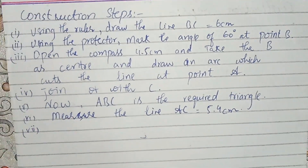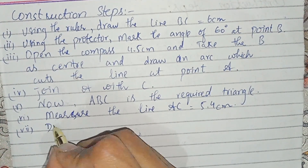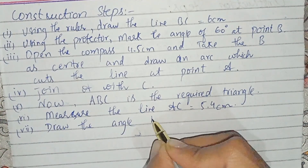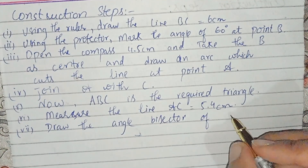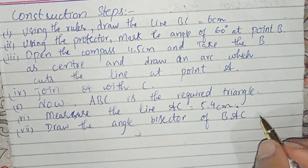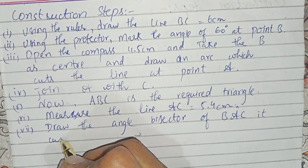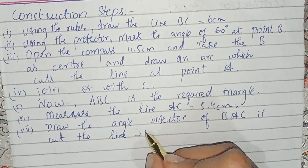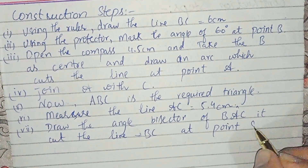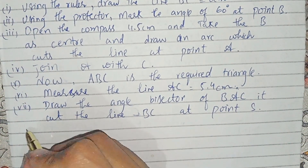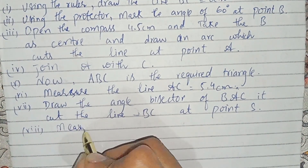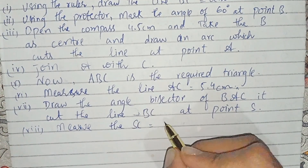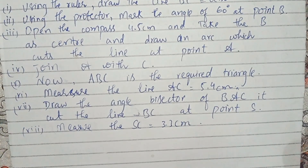Then draw the angle bisector of angle BAC, and it cuts line BC at point S. Then measure SC, which is equal to 3.3 centimeters. Write these steps in your own words — question number one is solved.